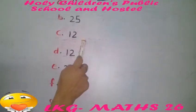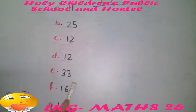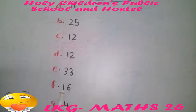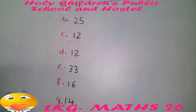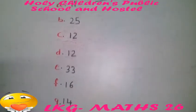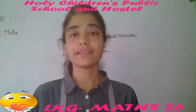C is 12, D is 12, E is 33, F is 16, G is 14. Children, complete your homework with the help of your parents.